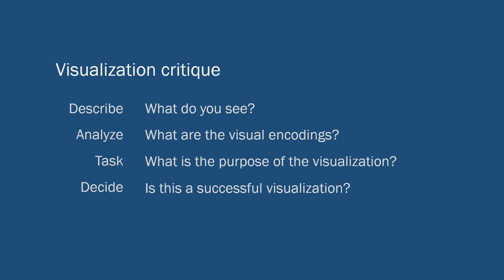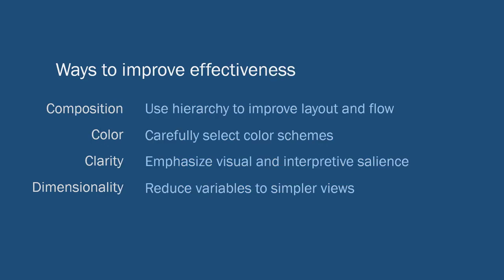We can utilize this framework for doing the same thing with visualizations, because we're often doing the same kinds of critical assessments. We describe what we see in the chart or graph. We analyze what the visual encodings are — the marks and channels used and what attributes they encode. What's different is we ask about tasks: what is the purpose of the visualization? This is similar to asking what the artist is trying to communicate, but now we ask what the designer who created the chart is trying to communicate. Then, based on that task, we ask: is this a successful visualization? Do they achieve the task they intend to achieve?